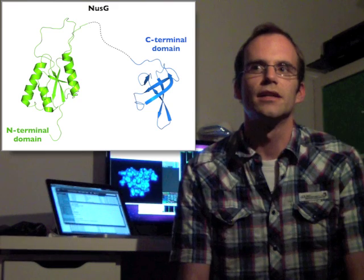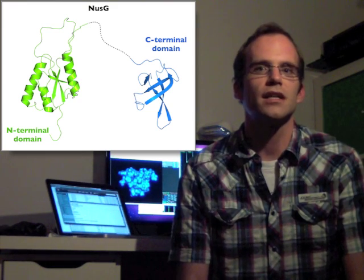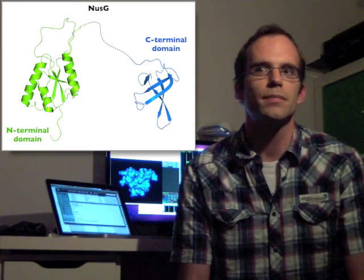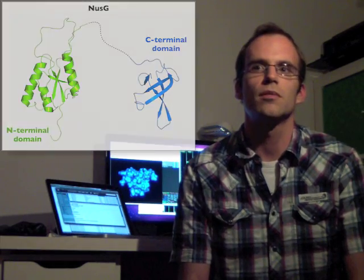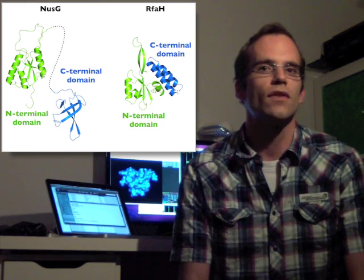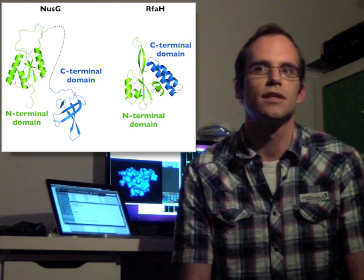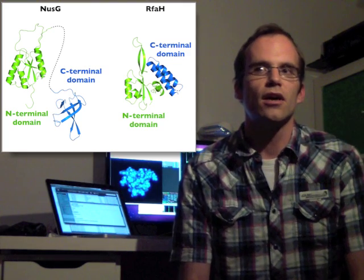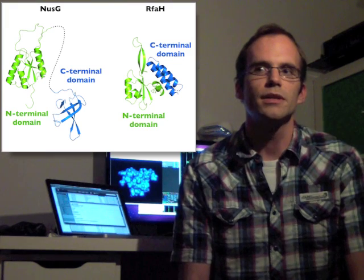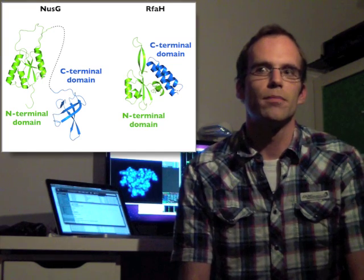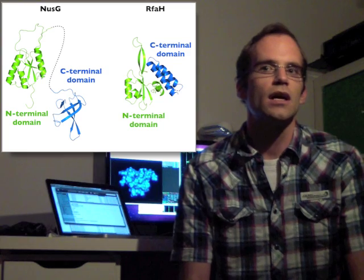In NASg, the domains move independently. The N-terminal domain is of mixed alpha-beta topology and binds to RNA polymerase. The C-terminal domain is a barrel-like beta sheet and interacts with diverse cellular partners. The crystal structure of RFAH shows that the N-terminal domains of RFAH and NASg are very similar. However, the C-terminal domains are conformational isomers. In RFAH, this domain folds into an alpha hairpin that tightly binds to the N-terminal domain.